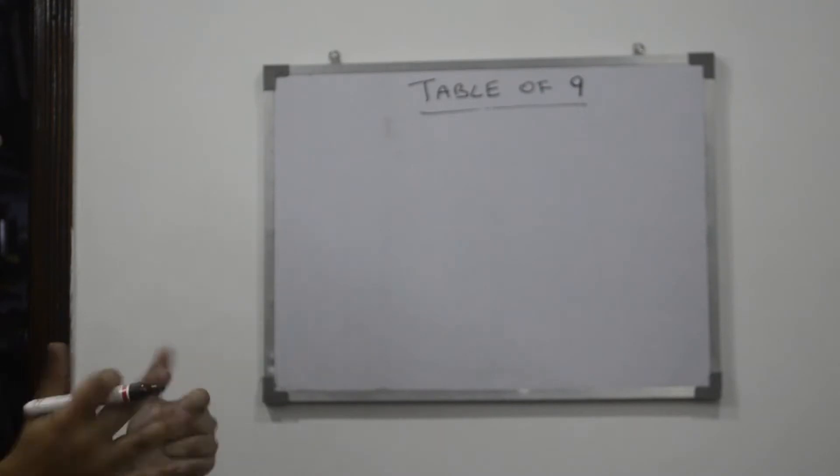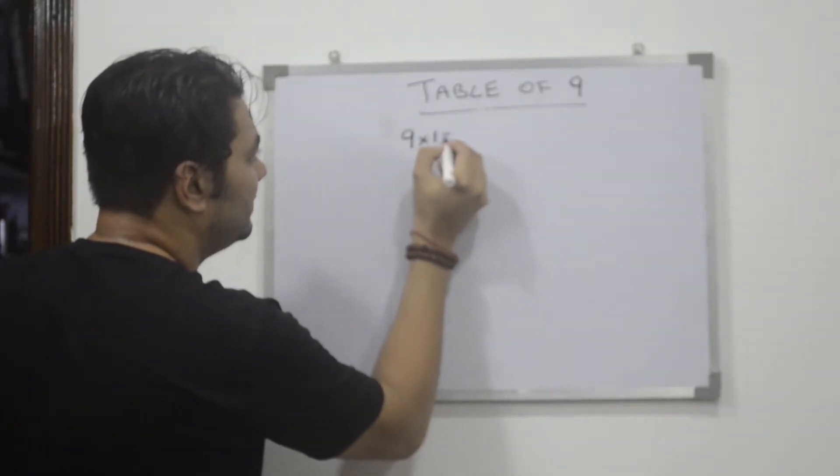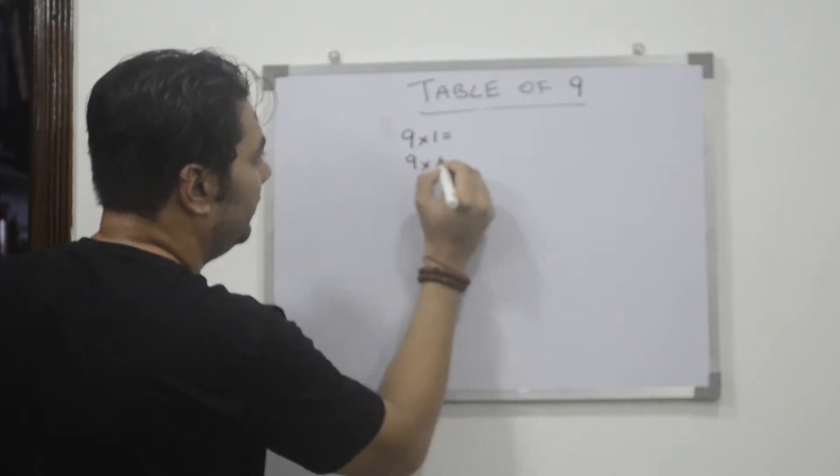Up to down, down to down, like this. So guys I'm writing here the table. Nine ones are, nine twos are...